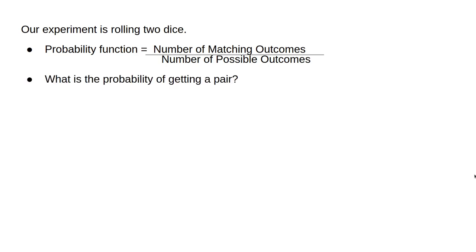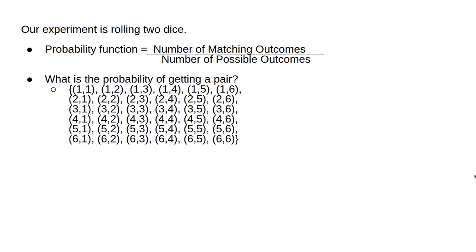Now we can ask questions like, what is the probability of getting a pair? One way to answer this is to just look at the sample space and count. There are six pairs in 36 possibilities, so the probability of a pair is one in six.